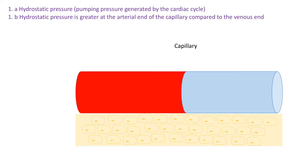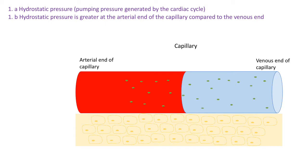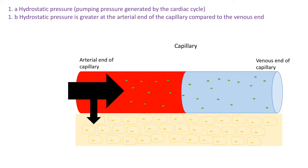Let's use a diagram to help with some of these answers. We have the capillary, the tissue, and then the arterial end and the venous end of that capillary. We'll add in some plasma proteins — they're important for some of the answers later. We can show that hydrostatic pressure is greater at the arterial end and lower at the venous end.